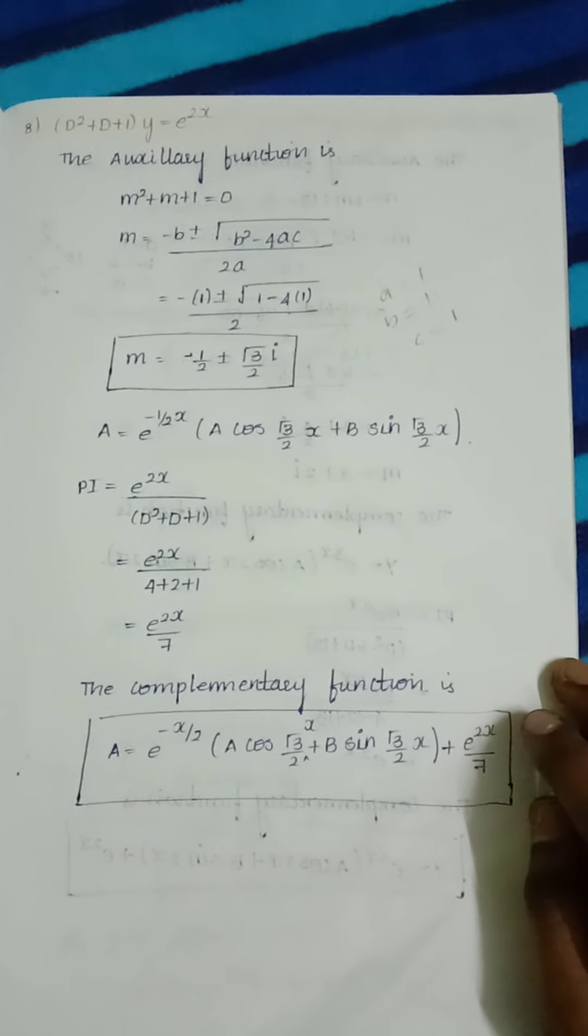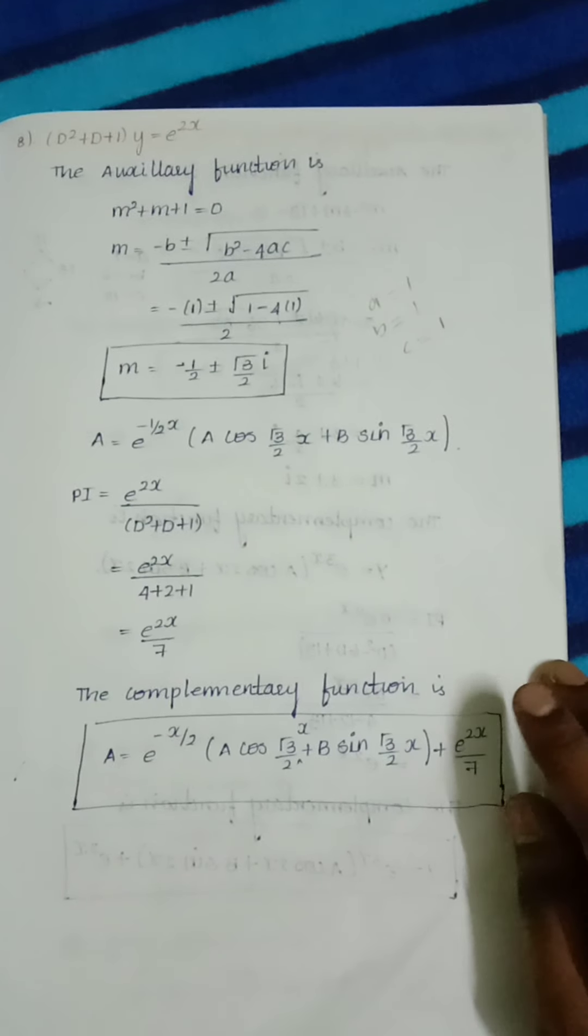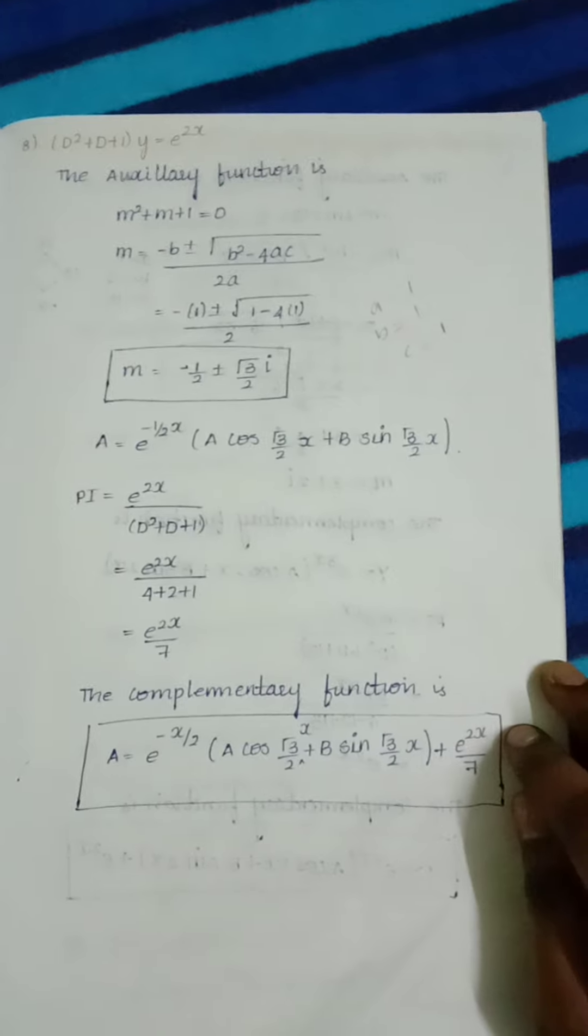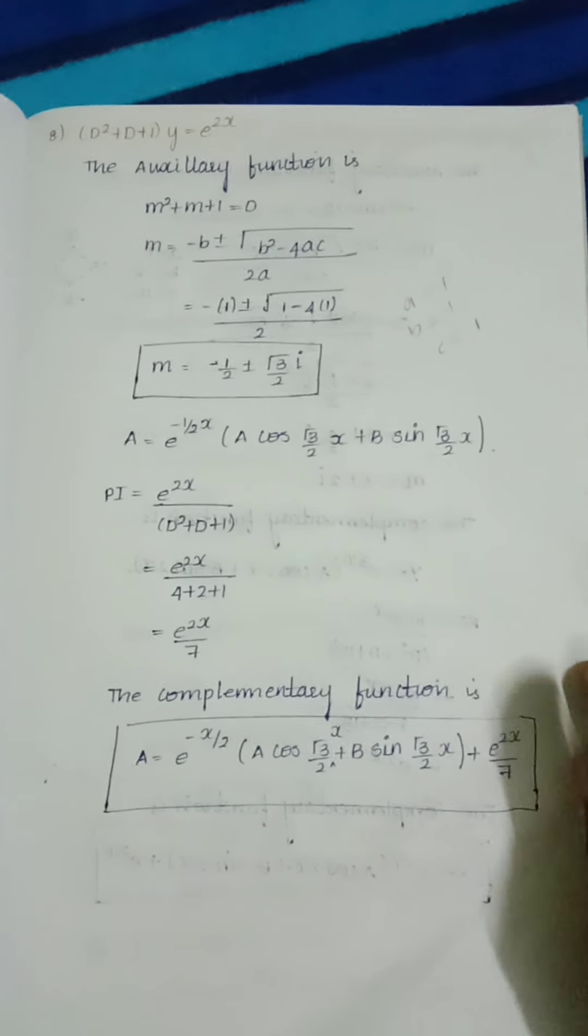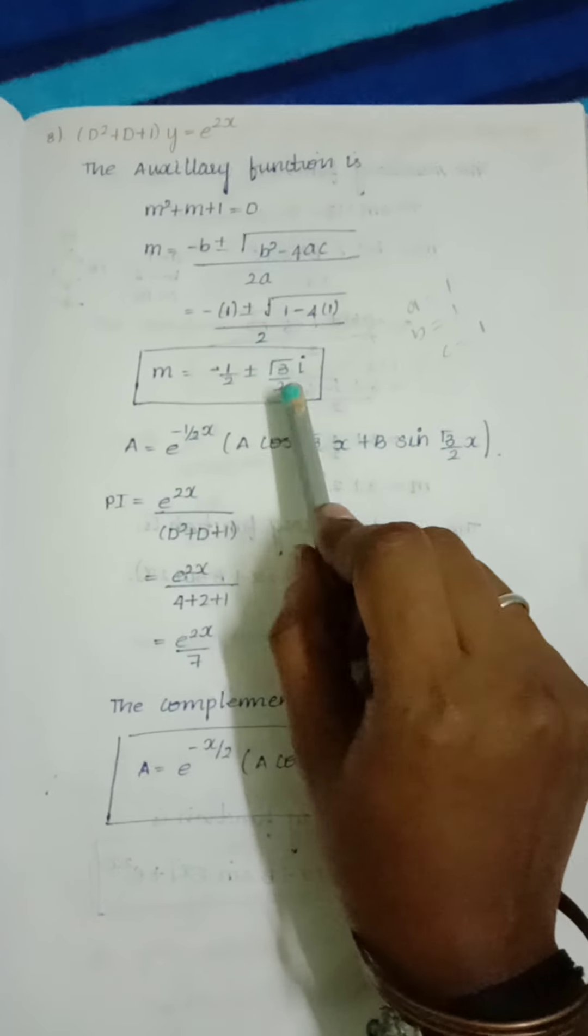That is e^(alpha x) into (a cos(beta x) + b sin(beta x)). We use that method: instead of alpha we put negative 1/2 and instead of beta we put √3/2.